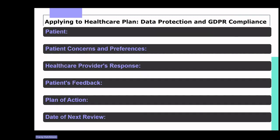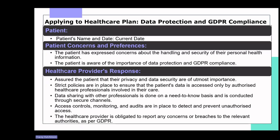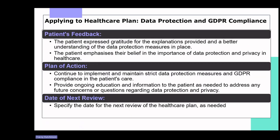After the role play, the next action the student could complete is filling in a healthcare plan pro forma in relation to the discussion with the patient. In this example the headings include: patient, patient concerns and preferences, healthcare provider's response, patient's feedback, plan of action, and data review. A completed example shows a summary reflecting the patient's concerns and preferences, the healthcare provider's responses and assurances, the patient's feedback, and a plan of action to maintain data protection and GDPR compliance throughout the patient's care. It serves as a record of the discussion and a commitment to safeguarding the patient's personal health information.